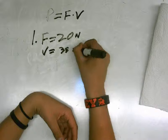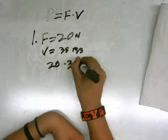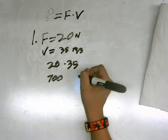So it's pretty easy, just plug it in. You have 20 times 35, and that gives you 700. And for power, the unit is watts, so it's 700 watts.